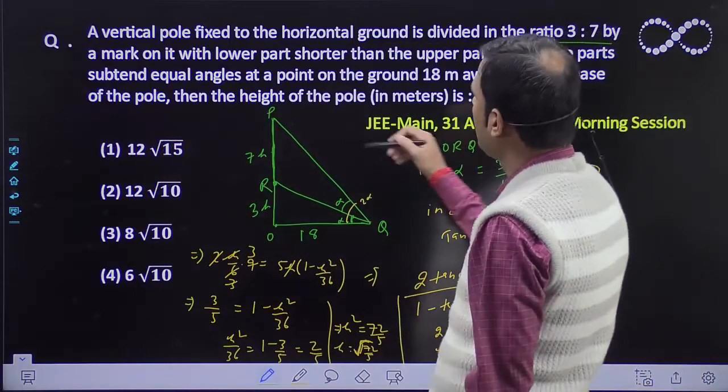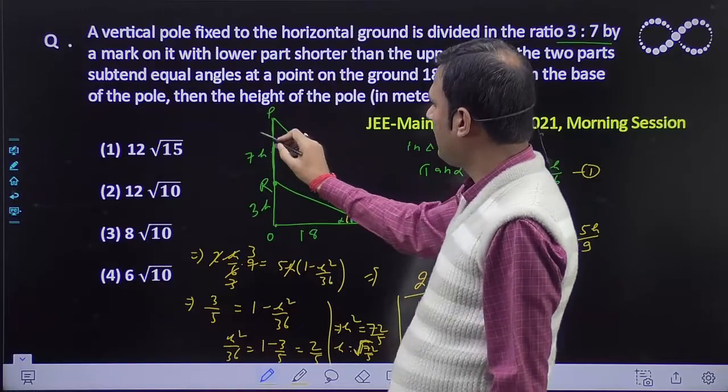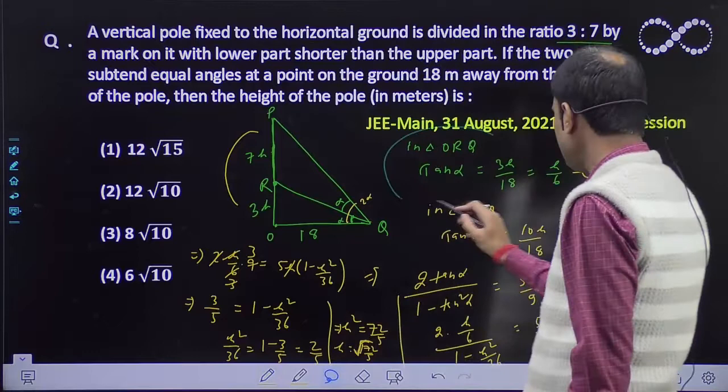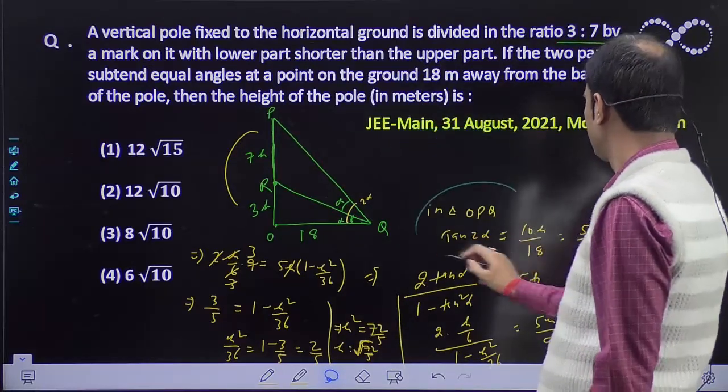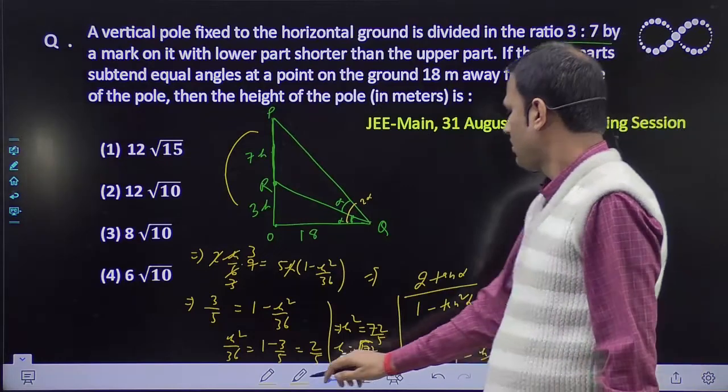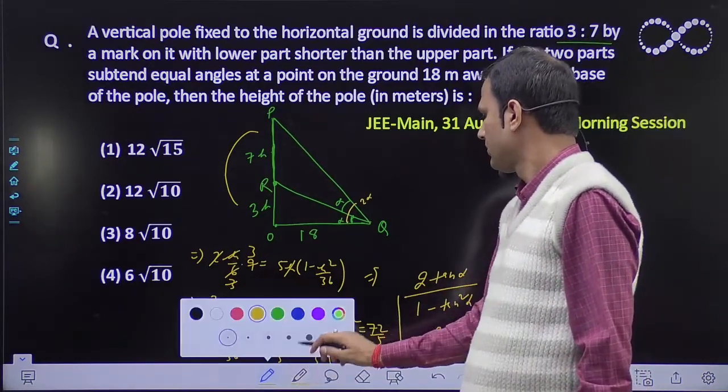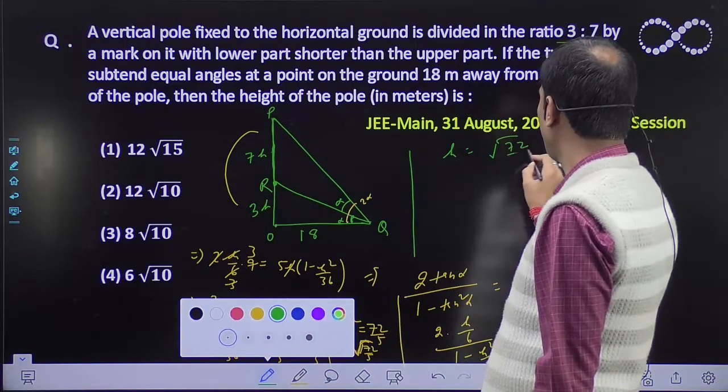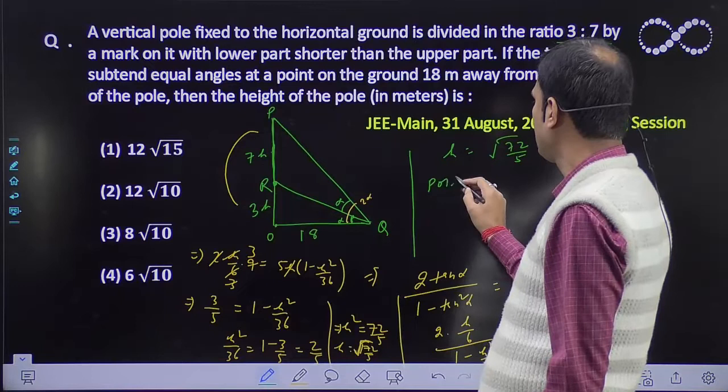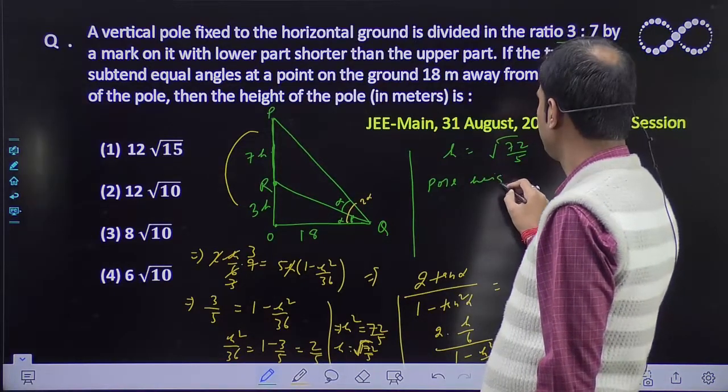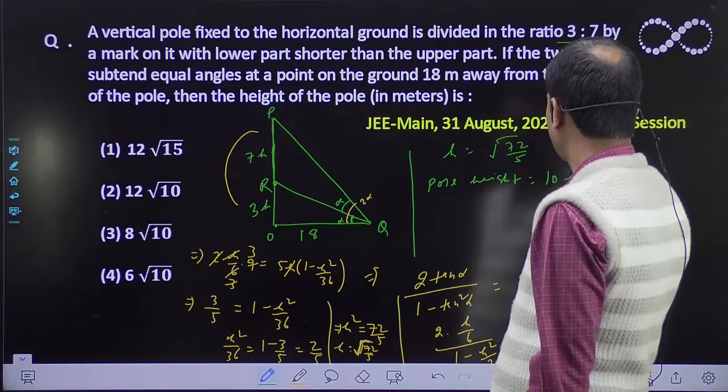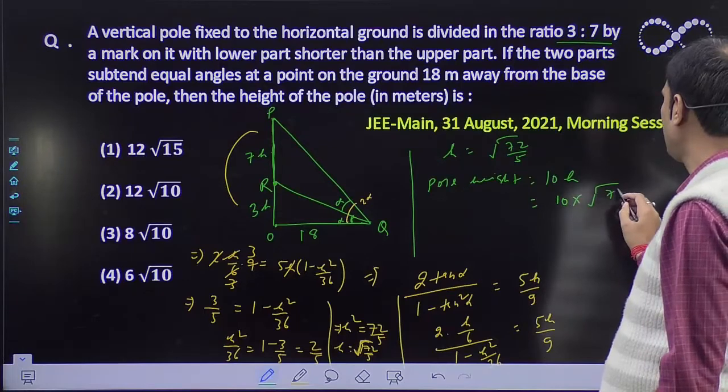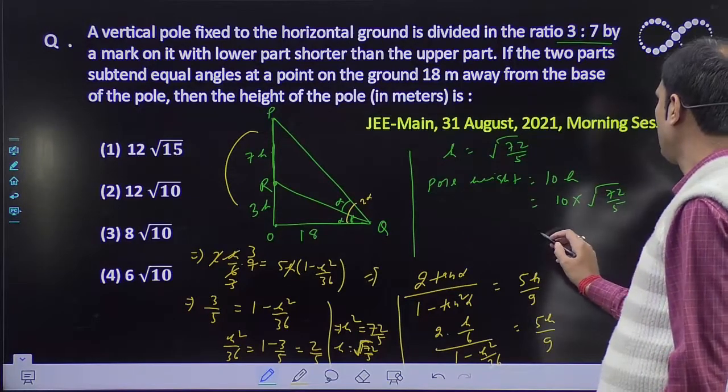Now what do we need? Height of the pole. The total pole's height is 10h. And you need to find what? We got the value of h as square root of 72 by 5. Pole height equals 10h. How much did it become? 10h. So now multiply here. 10 into h's value which is root over 72 by 5. This is your answer.